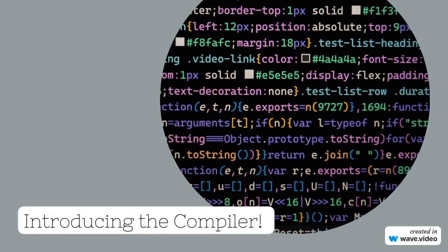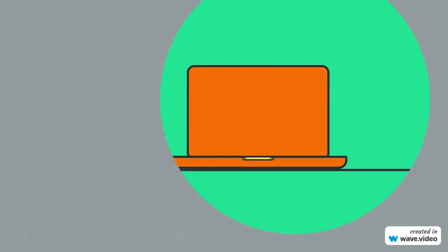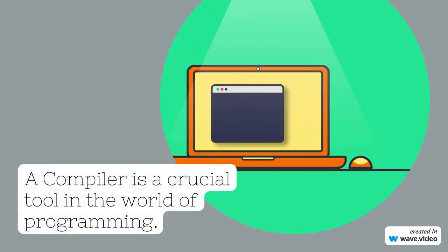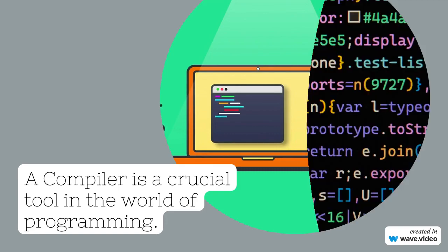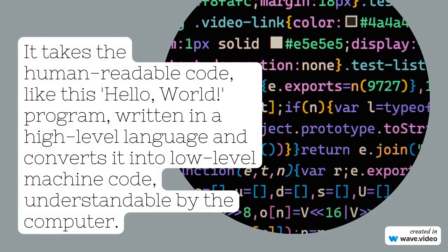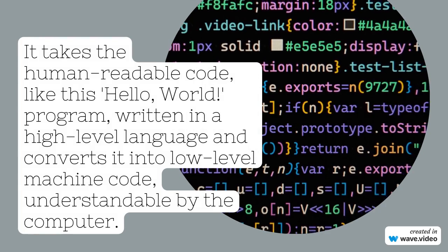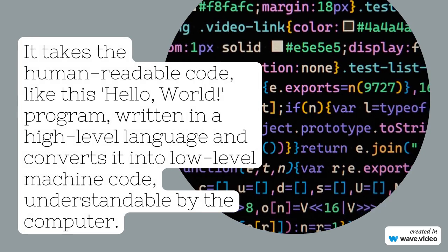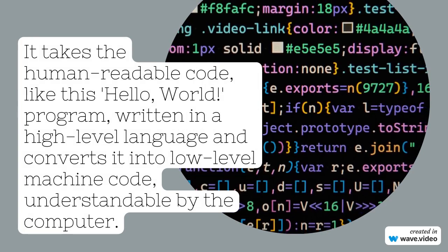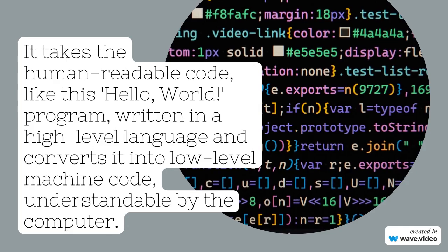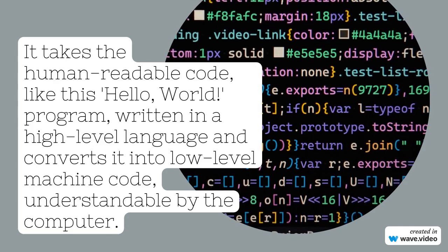Introducing the compiler. A compiler is a crucial tool in the world of programming. It takes the human-readable code, like this — hello world program — written in a high-level language and converts it into low-level machine code understandable by the computer.